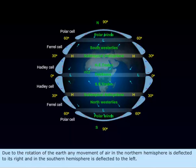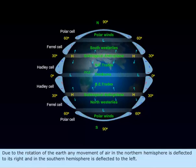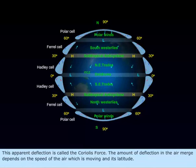any movement of air in the northern hemisphere is deflected to its right and in the southern hemisphere is deflected to the left. This apparent deflection is called the Coriolis force.